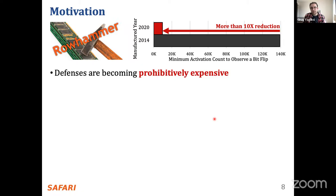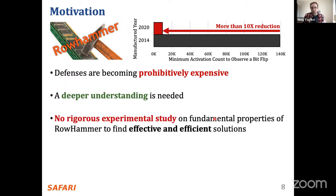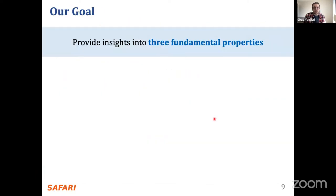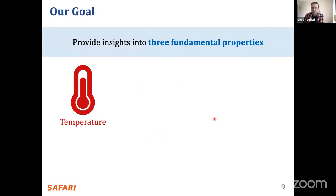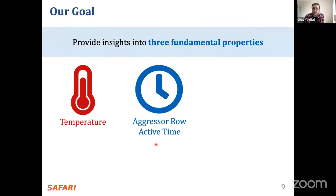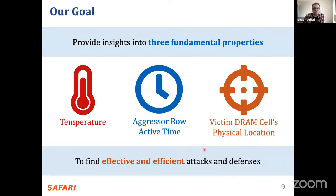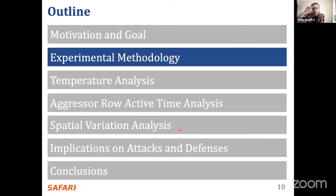As a result, existing defenses are becoming prohibitively expensive and we need a deeper understanding of row hammer. Unfortunately, no rigorous experimental study has looked at different fundamental properties and shown how row hammer changes. Our goal is to provide insights into three fundamental properties: temperature, aggressive row active time during the attack, and the victim cell's physical location. We want to investigate these to find effective and efficient attacks and defenses.